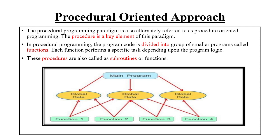In procedural programming, a large program code is divided into a group of small programs, where we call those small programs as procedures, functions, or subroutines. When you look at the picture, there is a main program where this main program is divided into function 1, function 2, function 3, and function 4, where these functions are termed as small programs which are going to perform a specific task.